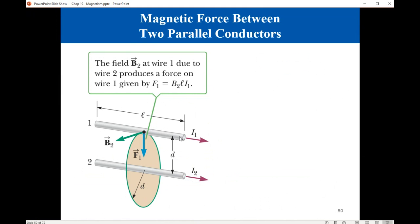So this wire will be attracted to the second wire. If you repeat, taking the first wire and considering the field created by the first wire at the location of the second wire, you will have another force which is also attractive, going upward in that case. The magnitude can be calculated.